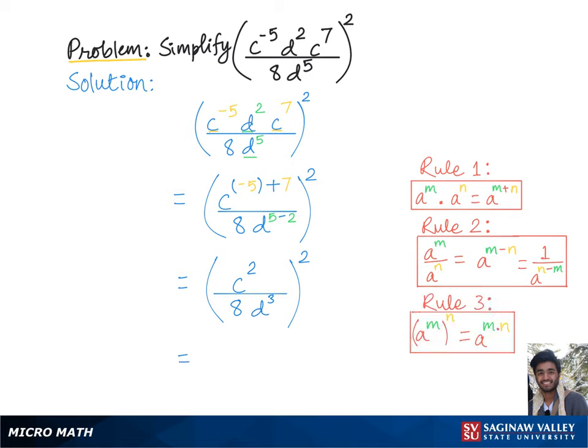According to which we'll basically multiply the exponents, that is c raised to the 2 times 2 over 8 times 2, multiplied by d raised to the 3 times 2.